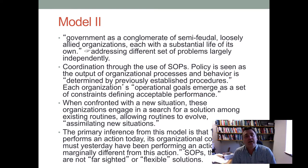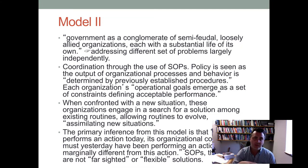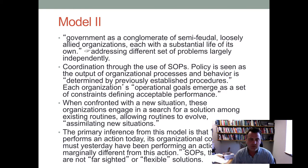The second model holds that government is like a conglomerate of semi-feudal, loosely allied organizations. They have their own life, they do what they think they can do best, and coordination is done through the use of standard operating procedures. Policy is the output of organizational processes and behaviors determined by previously established procedures — each organization does what they do best, or at least think they do best.